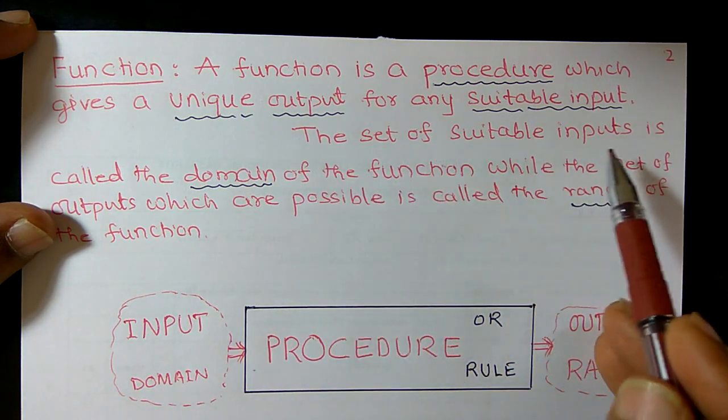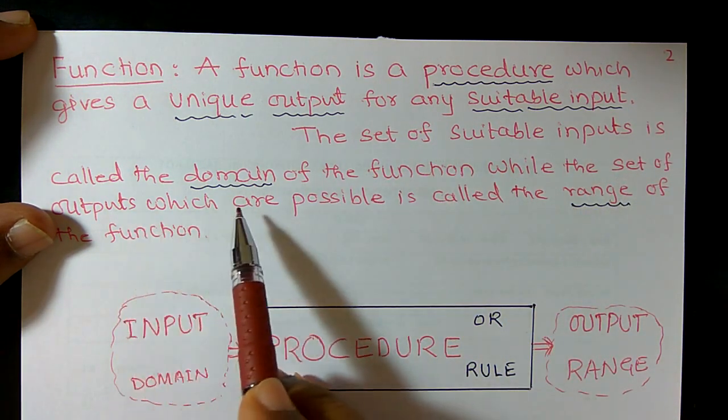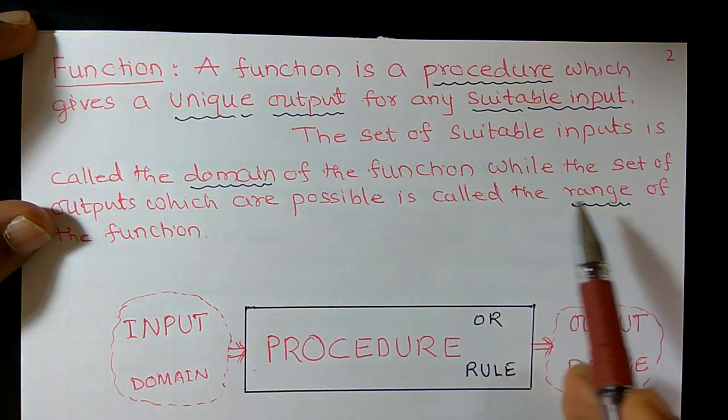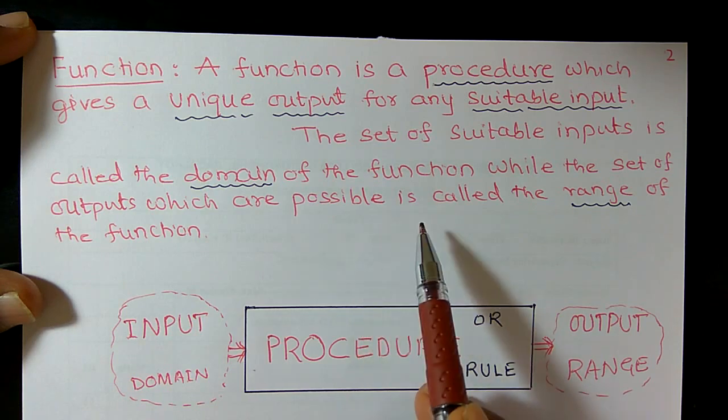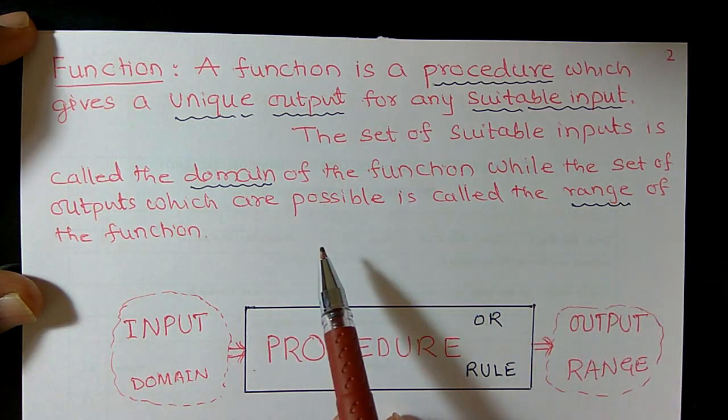The set of suitable inputs is called the domain of the function while the set of outputs which are possible is called the range of the function.